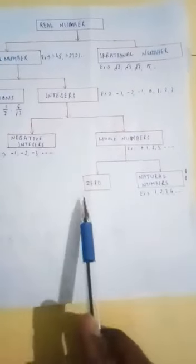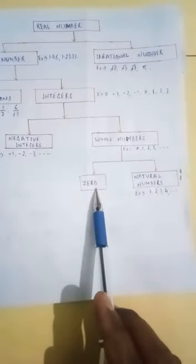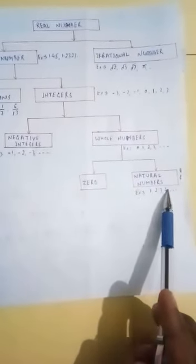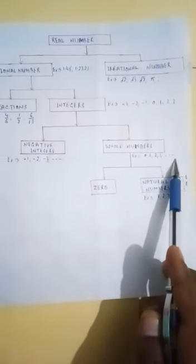Integers are simply positive or negative numbers, or zero. Whole numbers include zero and natural numbers. Natural numbers are 1, 2, 3, 4, and so on. So whole numbers are 0, 1, 2, 3, and so on. That is the flowchart for real numbers.